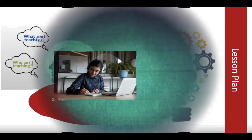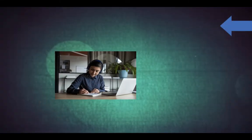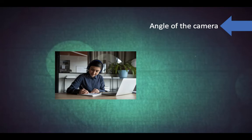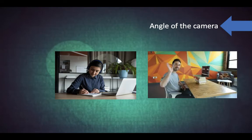Next is the angle of the camera. Most people simply put their camera on the table and start recording, but this tends to leave an upward angle that is not likely to show your best features. Try raising your laptop by placing books underneath to bring the camera up to your eye level. If using a phone, make sure it is in a fixed position so it doesn't move or wobble while you are teaching.